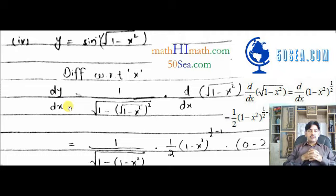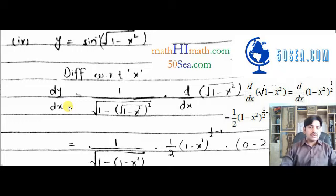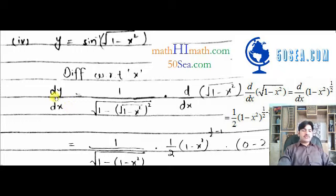The statement of this question: we have to differentiate y, which is equal to sine inverse of the square root of (1 minus x squared). We have to find dy/dx with respect to x.